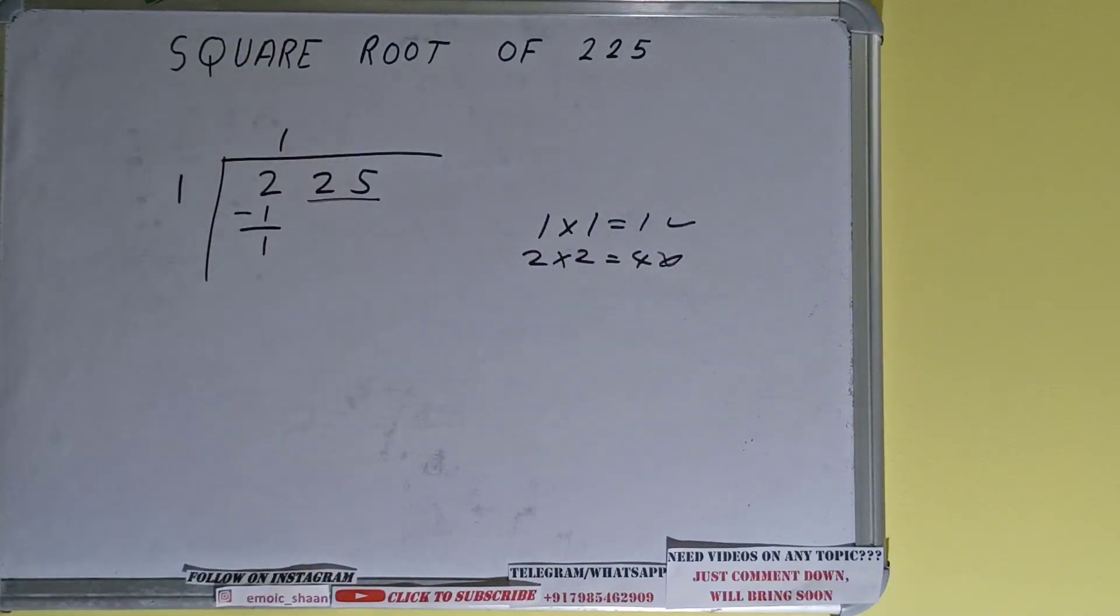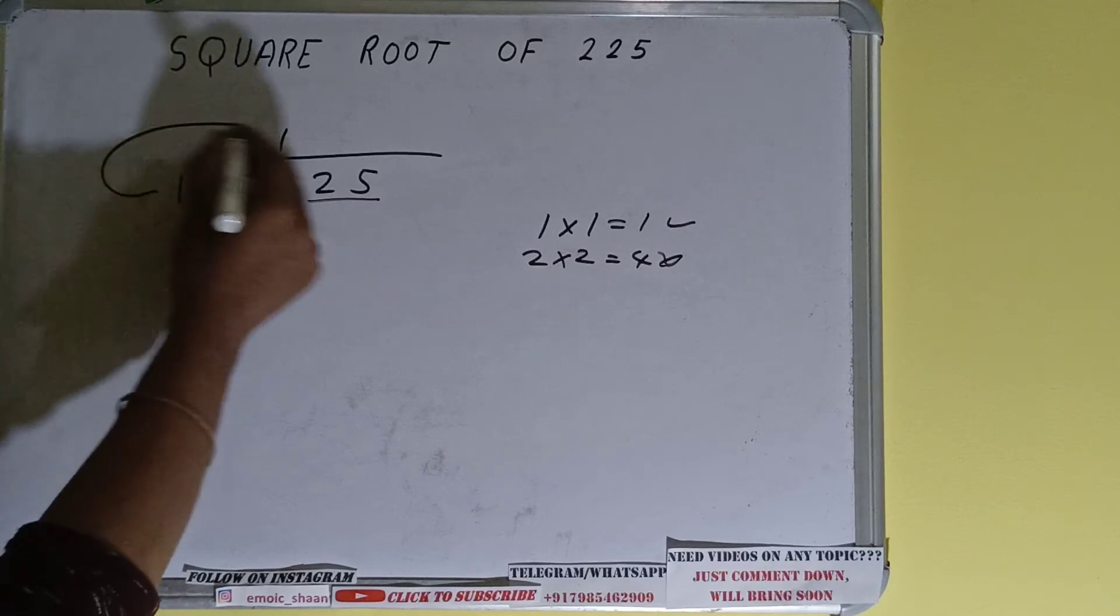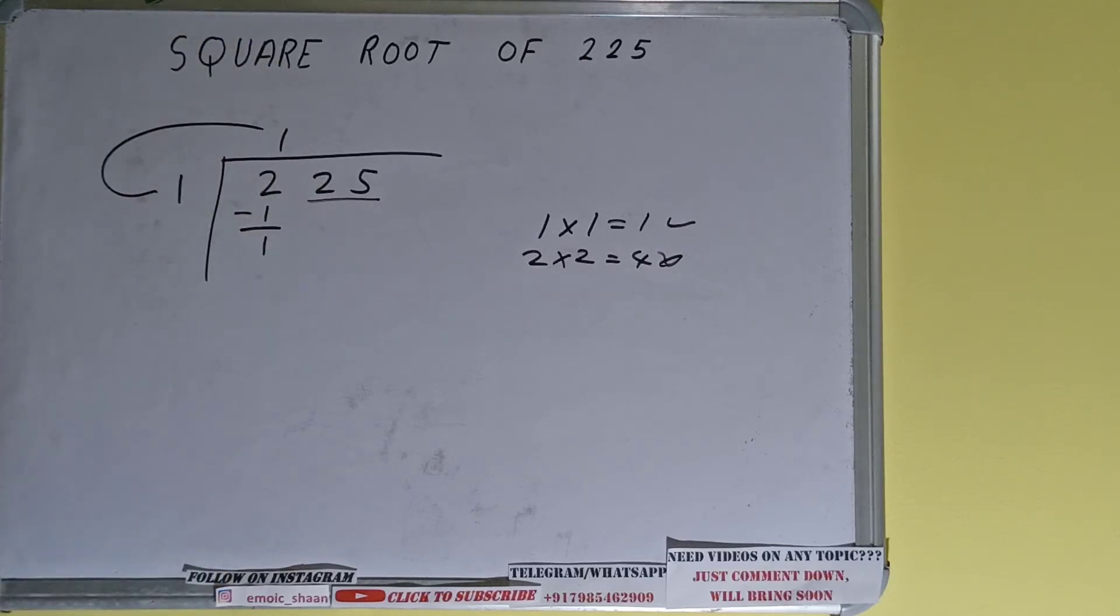Now whatever is the divisor, add it with what you multiplied it with. We did one into one, right? So one plus one, it will be two. Keep one digit extra over here.